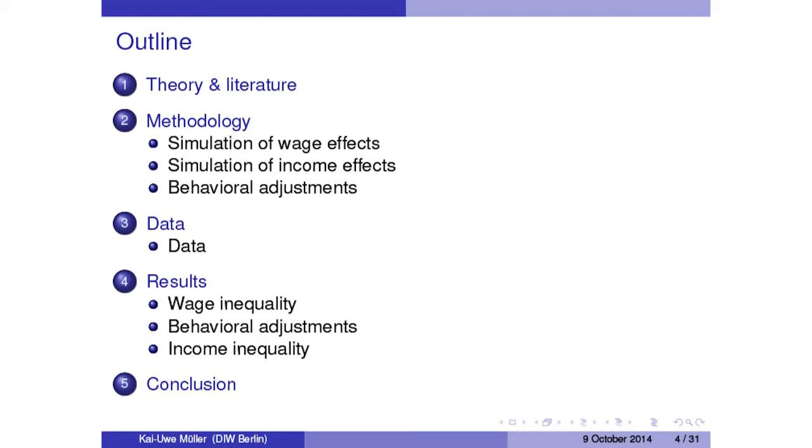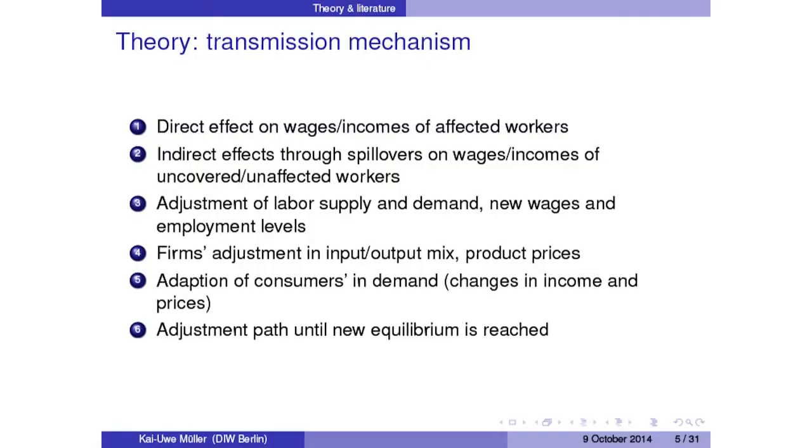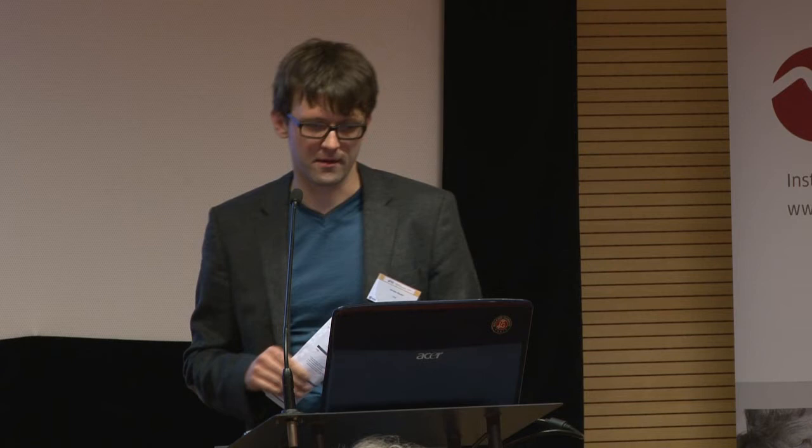I will briefly review the literature, then discuss the methodology in a non-technical way, briefly cover the data, discuss the results, and conclude. To give an idea of the transmission mechanisms behind a minimum wage in a Western economy: the first point is the nominal direct effect on the wage distribution for those covered and falling under the minimum wage — assuming full compliance, their wages are brought up to the minimum wage level.